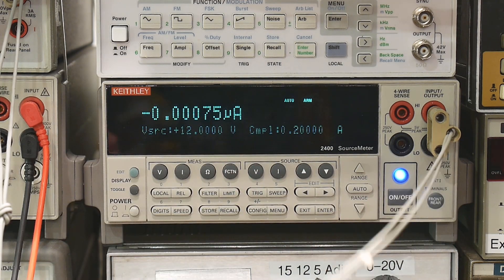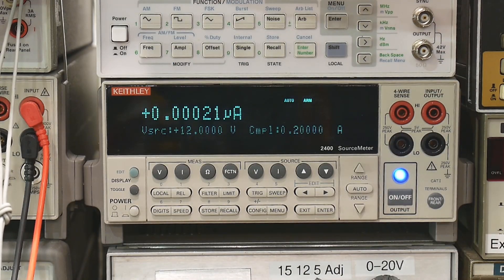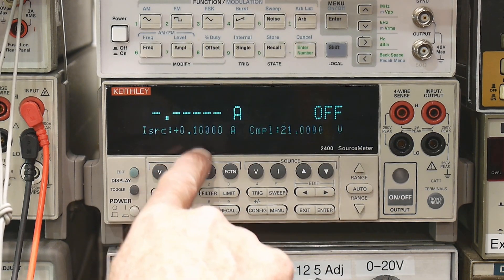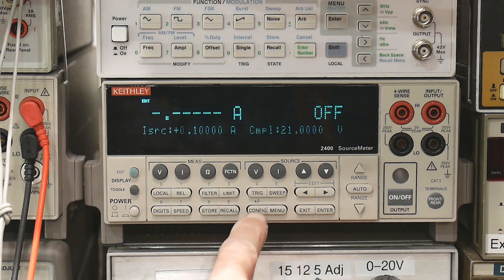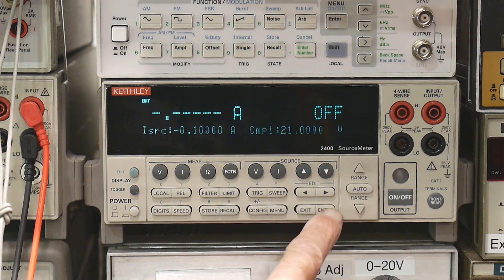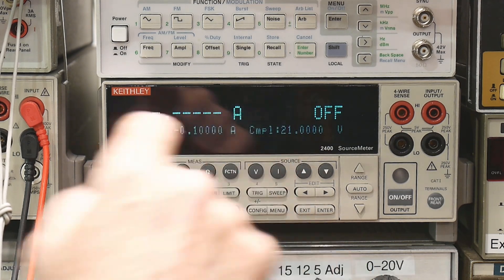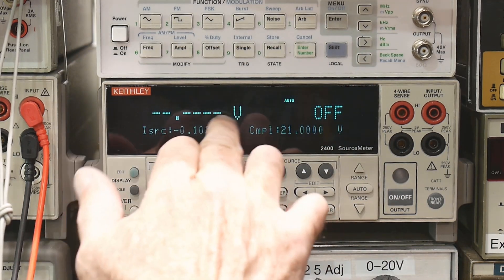So now what we're going to do is we're going to do the negative thing. Let me disconnect this. So we're going to do a source current. And this time though, instead of positive, we're going to hit the negative button. So we're going to source negative current with it, with the same compliance.